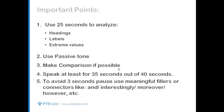Let's do a quick revision of what we learned today. For those 25 seconds given as preparation time in your describe image task, use them to analyze the headings in the image, the labels — whether on the top or bottom — and the extreme values, which could be the maximum or minimum ones. Always make sure you use the passive tone. Moreover, try making a comparison if possible, which will give a contrasting feature in your answer and help you score more. Make sure that you speak for at least 35 seconds out of the given 40 seconds.